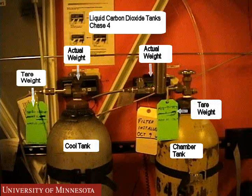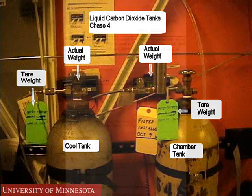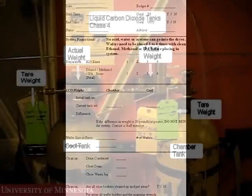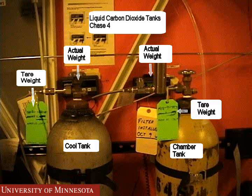Before using the CPD, verify there is enough liquid CO2 in the tanks behind the machine. The CPD log sheet has a place where the amount of CO2 remaining in the tanks can be calculated. Take the log book and go into the chase. Record the tare and actual weights for both the cool and chamber tanks. If the difference in tank weight is 30 pounds or less, the CPD can be used. If the difference is higher than 30 pounds, do not use the CPD. Contact the NFC staff member responsible for the equipment. When the tanks have been changed, the run can be continued.